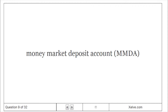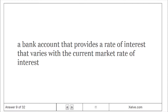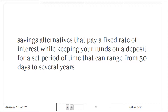Money market deposit account. A bank account that provides a rate of interest that varies with the current market rate of interest. Certificates of deposit: savings alternatives that pay a fixed rate of interest while keeping your funds on deposit for a set period of time that can range from 30 days to several years.